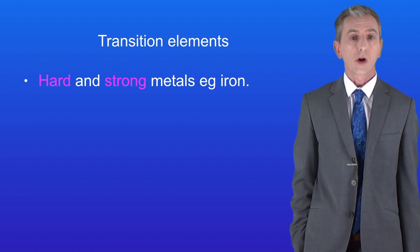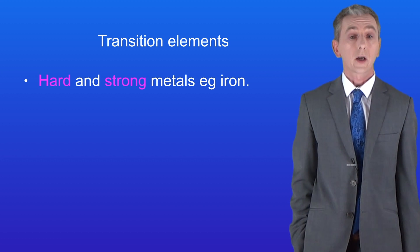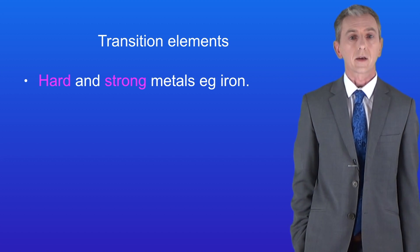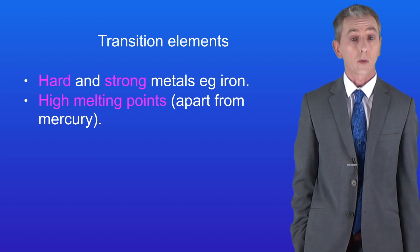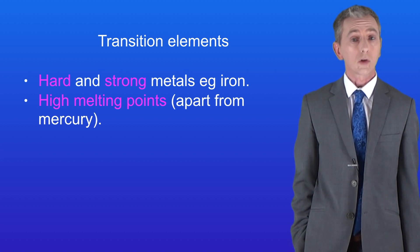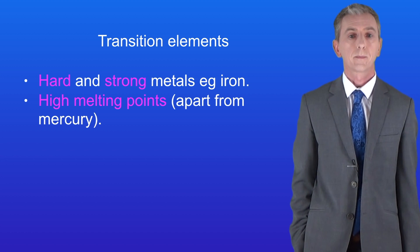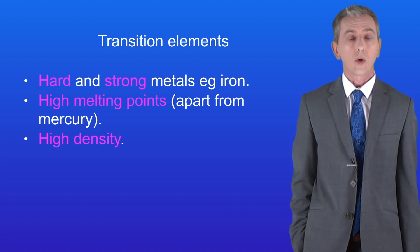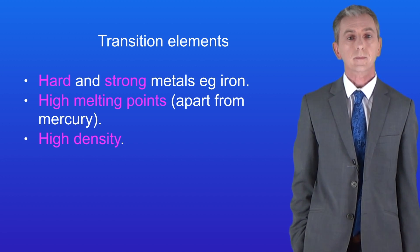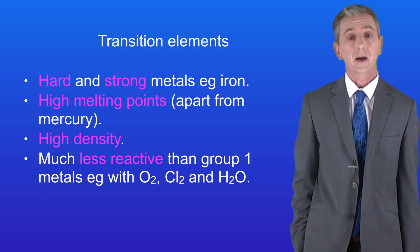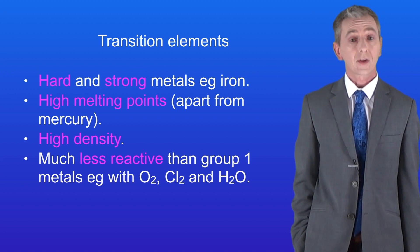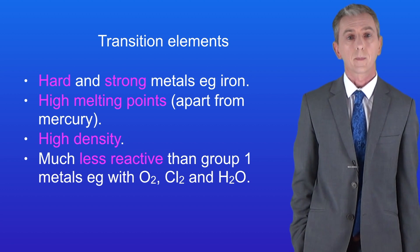The first key property is that transition elements are hard and strong metals — a good example is iron. Transition elements all have high melting points so they don't melt easily. The only exception is mercury which is a liquid at room temperature. Transition elements all have a high density and are much less reactive than group 1 metals, for example with oxygen, chlorine and water.